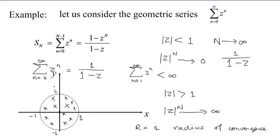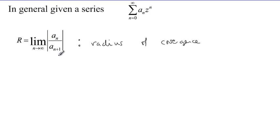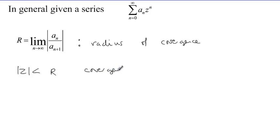Now, coming to the general case where a series is given by the sum of a_n times z to the power n, the given formula defines the radius of convergence. You take the absolute value of two successive terms — the ratio of one term to the next — and calculate the limit; you get the radius of convergence r. For this series, if the absolute value of z is less than r the series will be convergent, and if the absolute value of z is greater than r the series will be divergent.